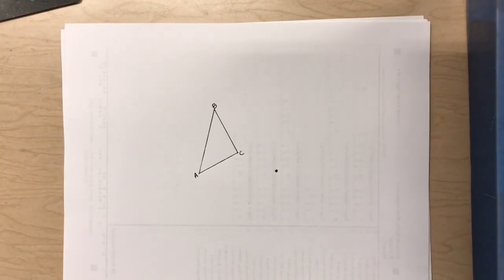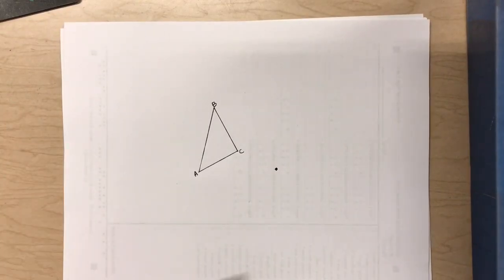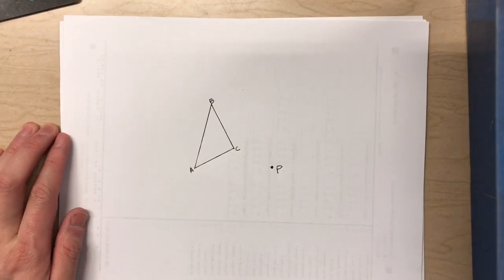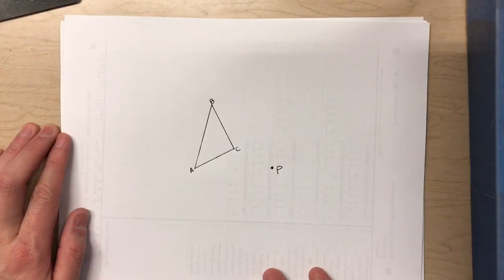Today we learned how to construct dilations. In a dilation, what we're doing is based on some point, I'm going to call this point P, we can either enlarge or shrink a figure based on a scale factor that we're given.